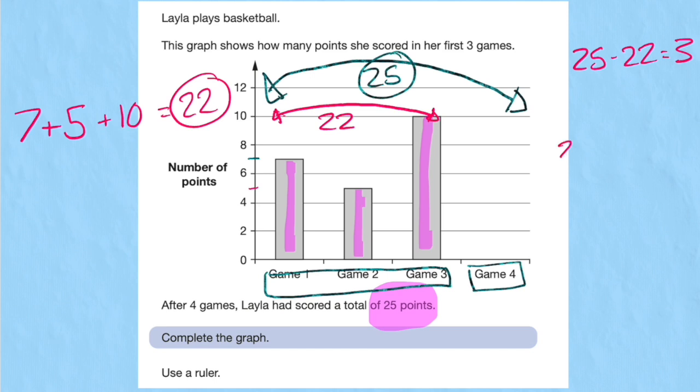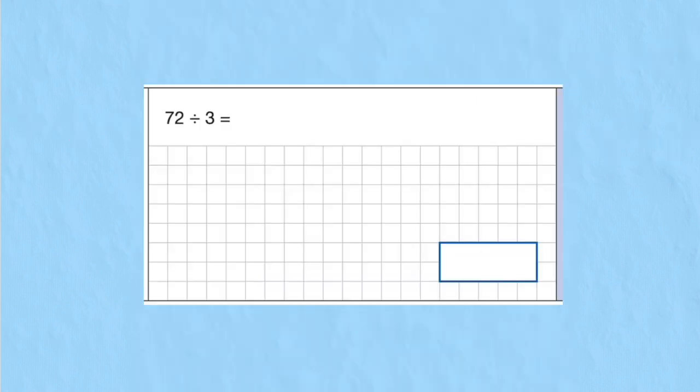Or I could do 22, and then just simply count on to 25. 22, 23, 24, 25. We counted on three. Same answer. But I'm not finished. I need to fill in the graph like it says. So I'm going to draw a bar graph next to my bars, making sure I am not touching the bar before. There we go. Shade it in if I want. Correct answer.